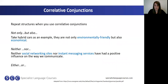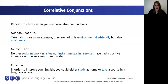We can also use a similar structure — 'either... or' — with a parallel structure. For example: in order to improve your English, you could either study at home or take a course in a language school. Here we're following the verb pattern after 'could': we use an infinitive without 'to', so we have could either study or take. These parallel structures add cohesion to your writing and make it easier to understand and flow.